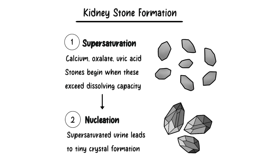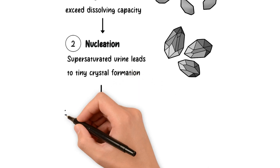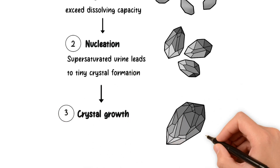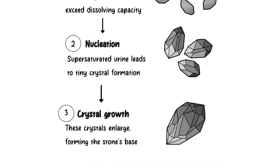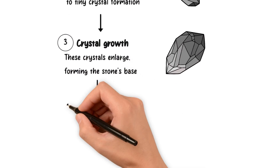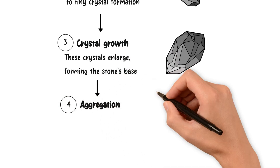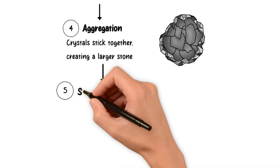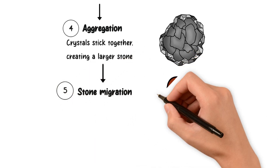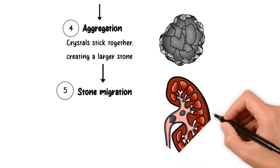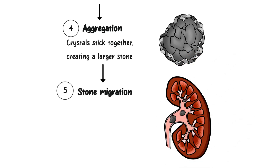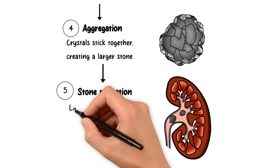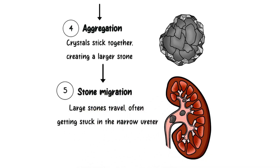The type of crystals that form depends on the composition of your urine. Step three is crystal growth: once these crystals form, they can grow larger over time, creating the foundation of a kidney stone. Step four is aggregation: as these crystals continue to grow, they may start sticking together, and this aggregation can result in the formation of a larger, solid stone. Finally, step five is stone migration: once a kidney stone reaches a certain size, it may break free from the kidney and start to move down the ureter. The real pain often starts when the stone gets stuck in the narrow ureter.